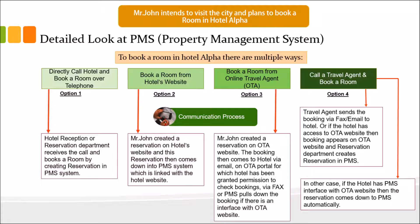Once the room is booked, the guest will receive a confirmation email from the hotel. Another consideration is whether the booking is guaranteed or non-guaranteed. Guaranteed means the guest has provided credit card details or paid the money at the time of booking — whether through the hotel's website, OTA website, travel agent, or by phone.